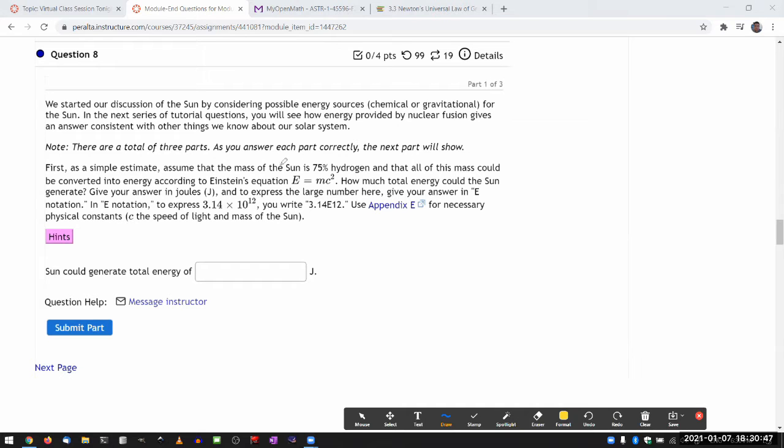It's telling me to assume that the sun is 75% hydrogen by mass and that all this mass could be converted into energy. And that's striking me as an overestimate because in the fusion reaction, all of the hydrogen doesn't turn into energy. Some of it has to go to helium mass. But it's telling me to assume that. So we'll assume that and say that all the mass of the hydrogen goes into energy. It asks how much total energy could the sun generate?